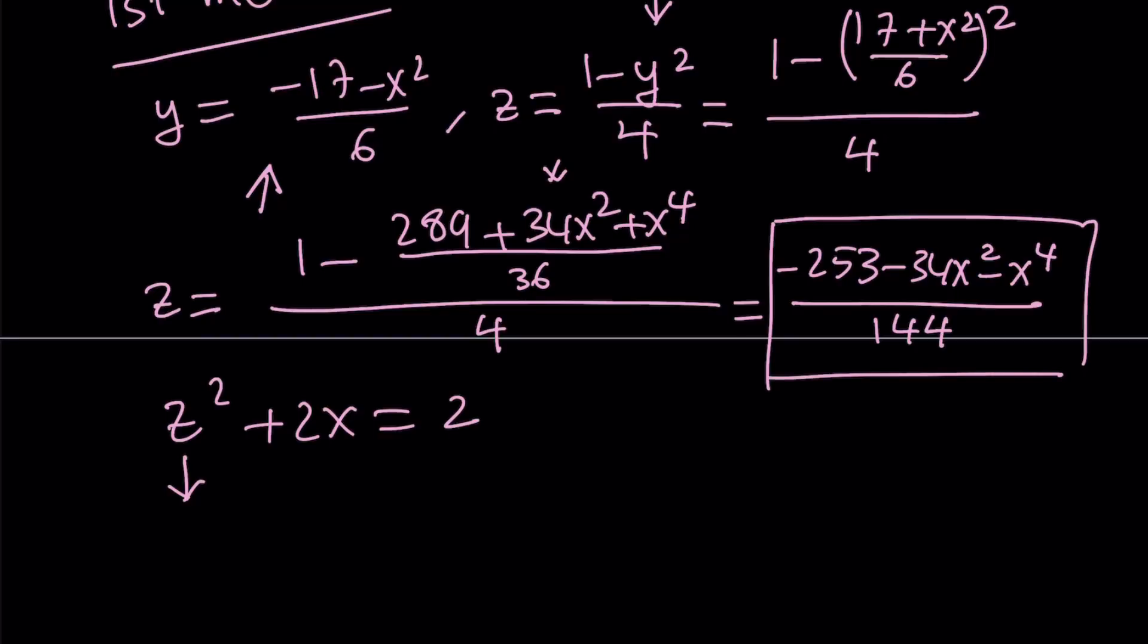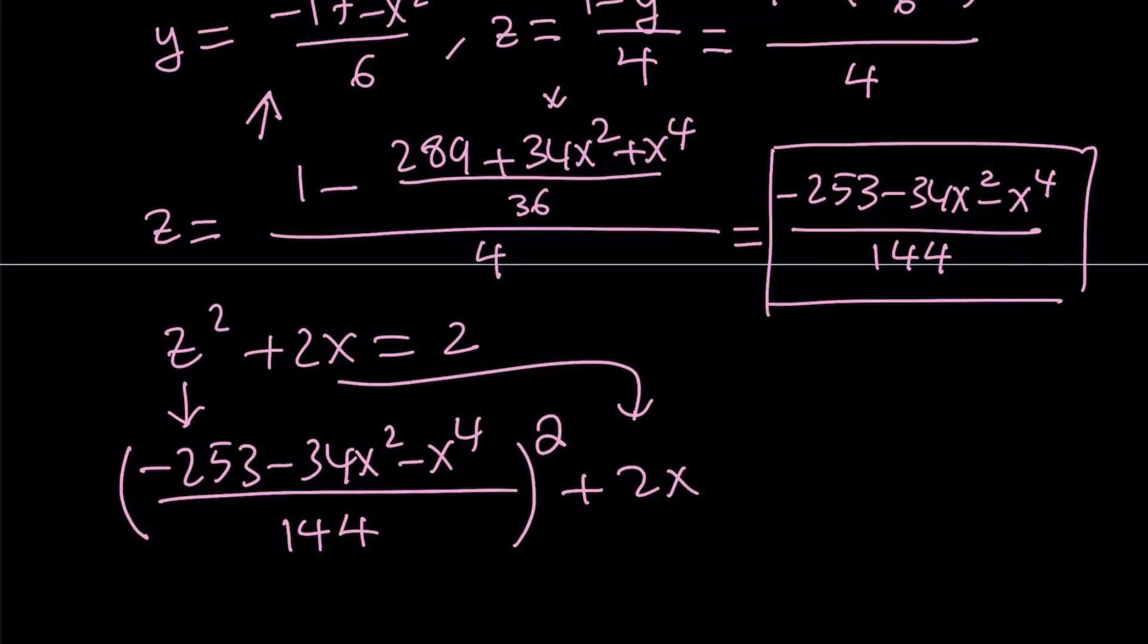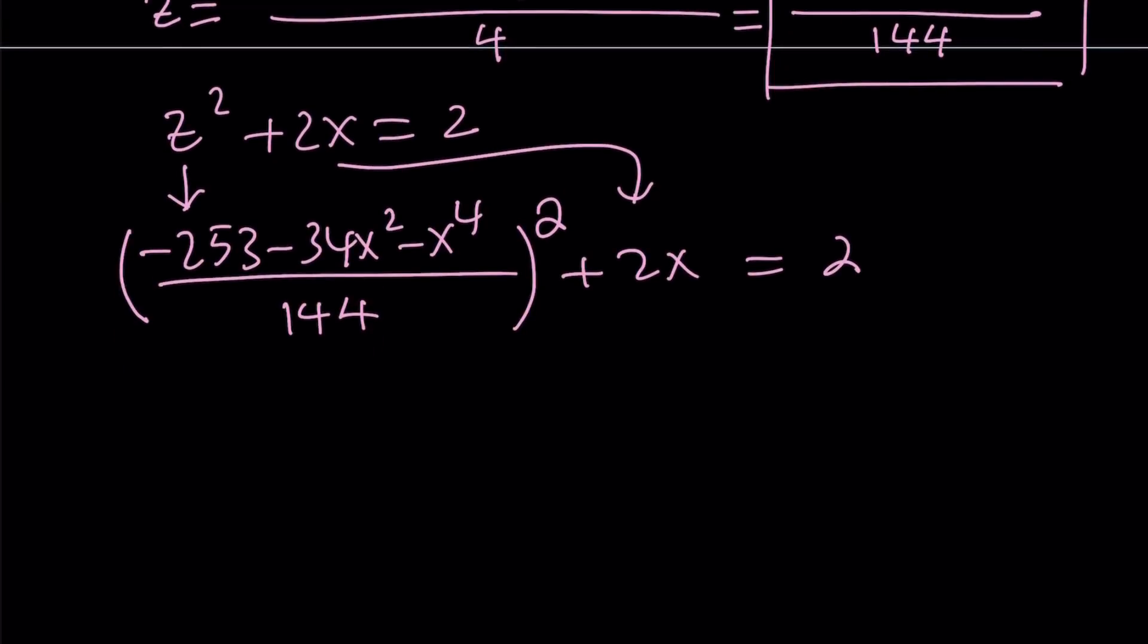And we used y for that, remember? So we're going to use that equation: z squared plus 2x equals 2, that's my third equation. And now I'm going to replace z with what it is. Now, sorry for the pain I have to put you through from now on until the end of the first method. So bear with me.